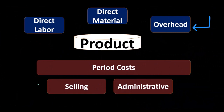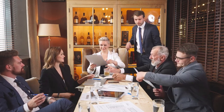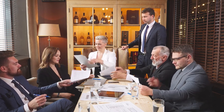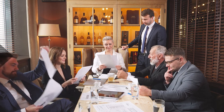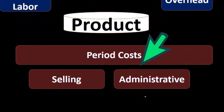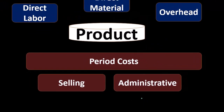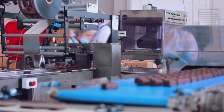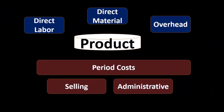The utilities bill on the executive office — unlike the utilities on the factory, which would go into overhead — would be expensed as we would typically think. If we're talking about depreciation on the executive office, we would record depreciation expense. If it was on the factory, we would include it in the inventory in some way. These selling and administrative expenses act more like what we're used to if we've dealt with companies that don't make inventory — companies that buy and sell inventory or are service companies.